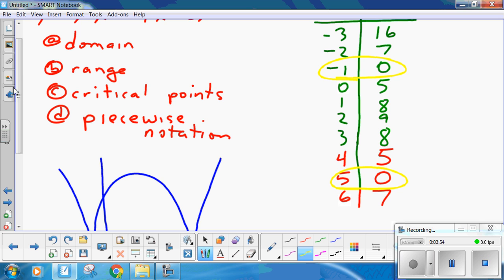Now, domain: x is all real. Range: y is greater than or equal to 0. The critical points. Minus 1 and, sorry, minus 1 and 0. And 5 and 0. Now,